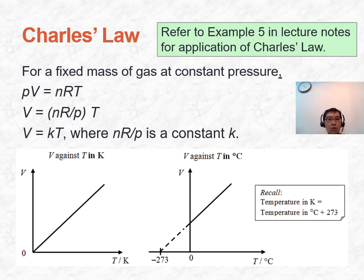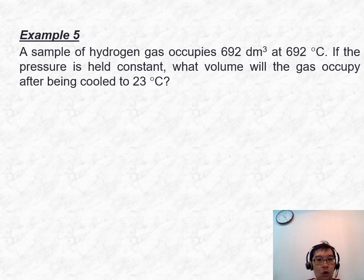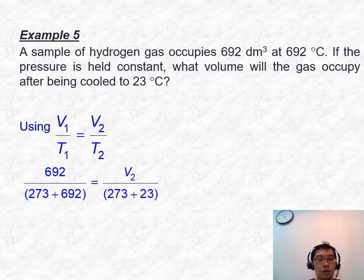Take the next 3 to 5 minutes to attempt example 5. To solve it, use Charles' Law since we are talking about a fixed mass of gas at constant pressure. Using V₁/T₁ = V₂/T₂ and converting temperature to Kelvin, the final answer is 212 dm³.